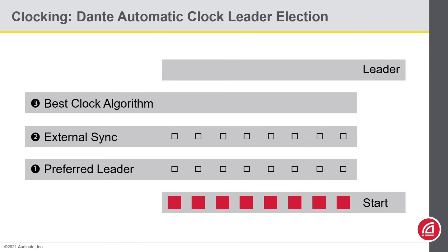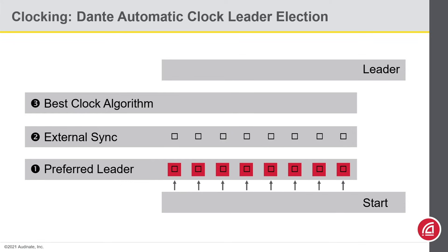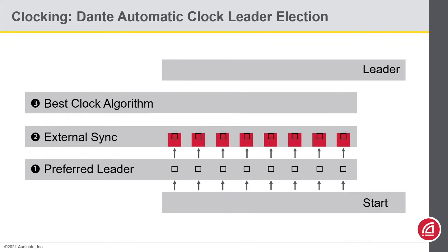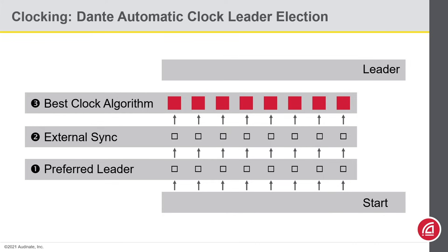Let's suppose nothing is marked for preferred leader or external sync — basically, this is what happens when everything comes right out of the box. In the first step, no device is set as preferred leader, so all candidates advance. In the second step, no device is set to chase external sync, so again all candidates advance. Finally, the best clock algorithm will choose one leader.